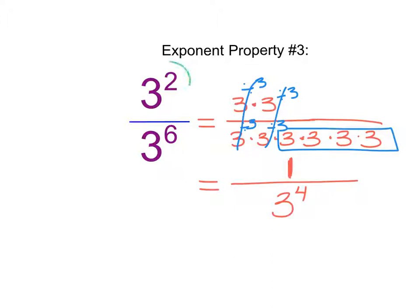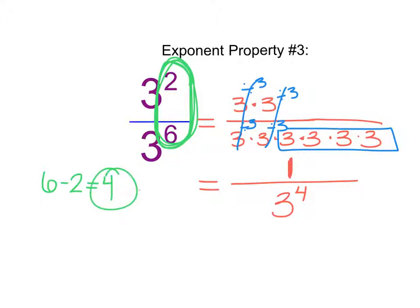If I take a look at what I started with, I notice that the relationship between 6 and 2 — the way that I could produce 4 is by taking 6 minus 2, and that equals 4. So essentially, I can subtract my exponents, and then I leave the 4 remaining 3's wherever I had the bigger exponent, which in this case was in our denominator.